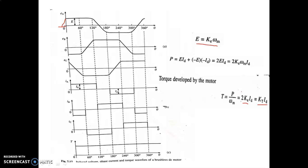The working of the trapezoidal PMAC motor is similar to that of a DC motor. In a DC motor we need slip rings and brushes, but in the BLDC motor these are eliminated. The BLDC motor is equivalent to an AC motor without the mechanical commutation components. Thank you, students.